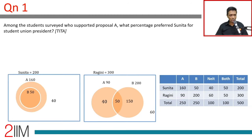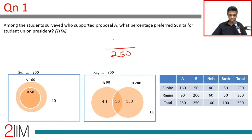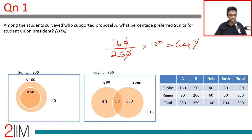Question 1: Among students surveyed who supported proposal A, what percentage preferred Sunita for student union president? Among the 250 who supported proposal A, 160 preferred Sunita. So 160 divided by 250 times 100 equals 64%.